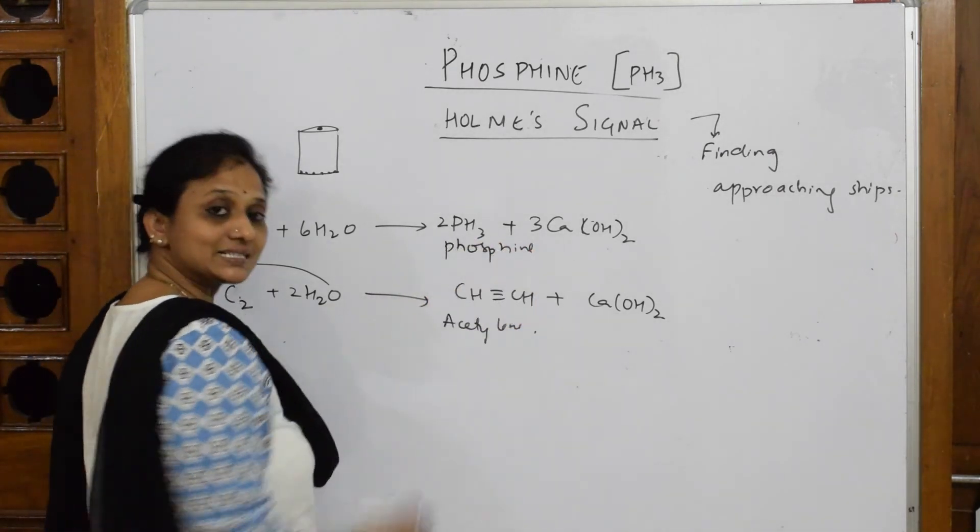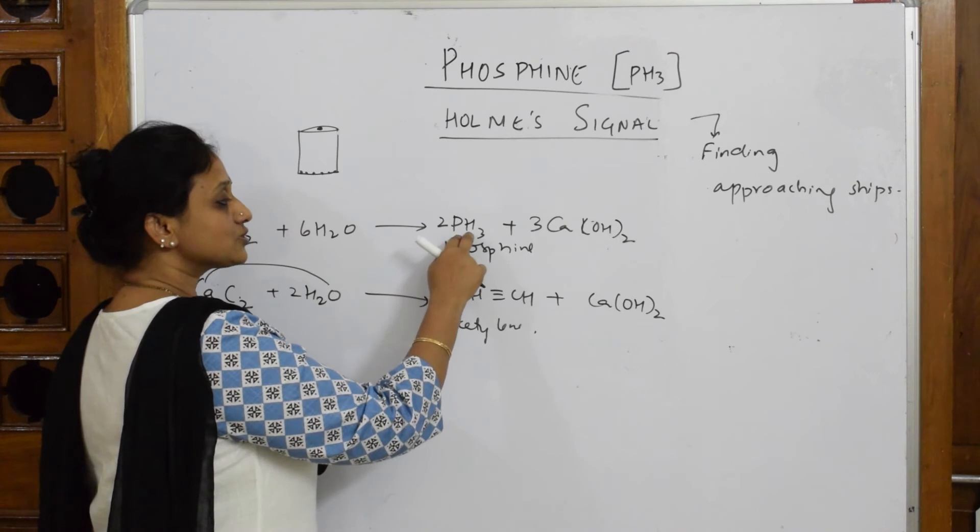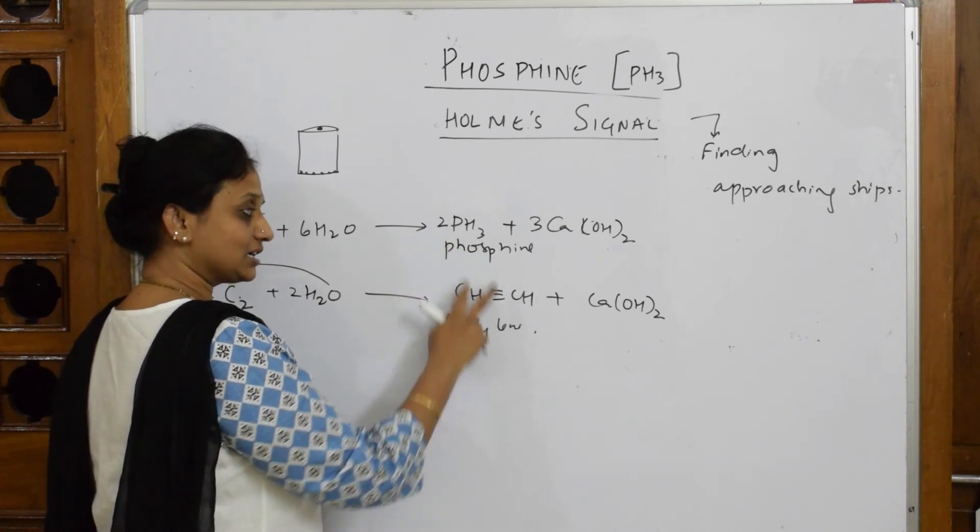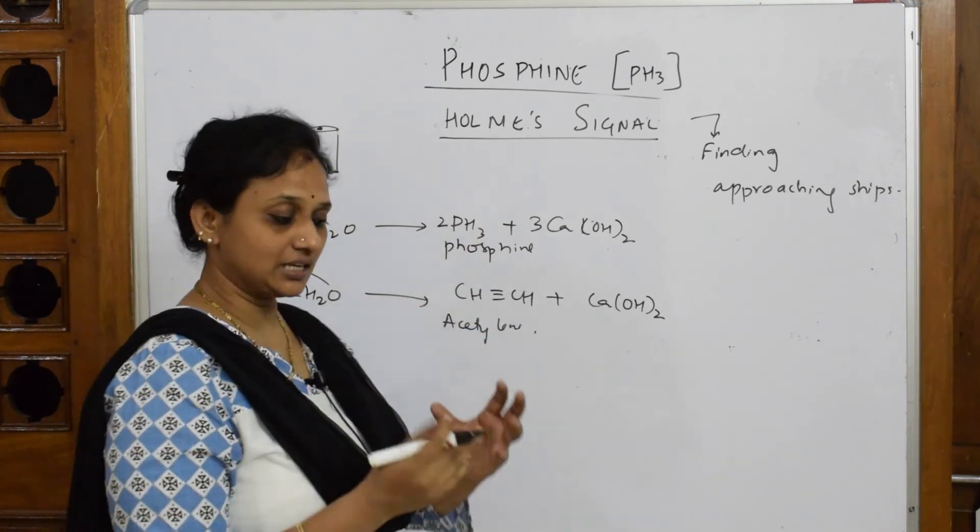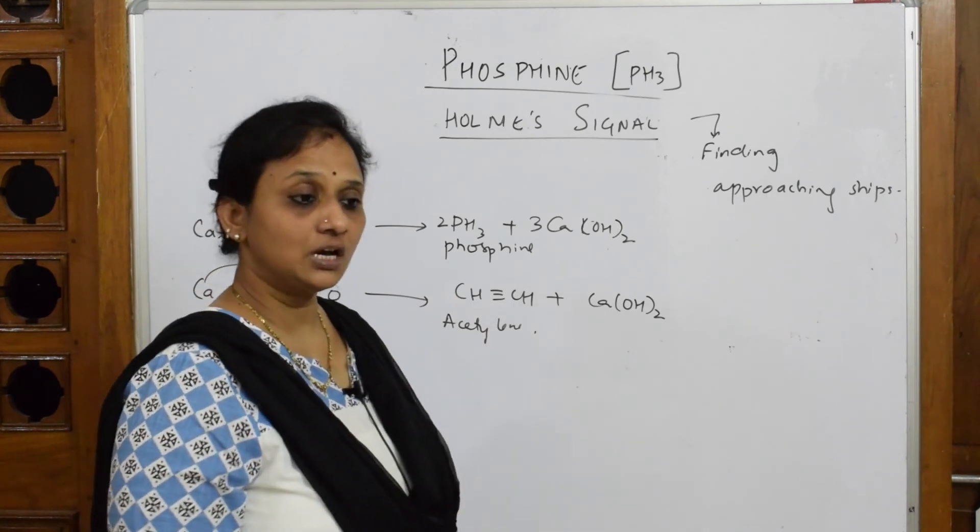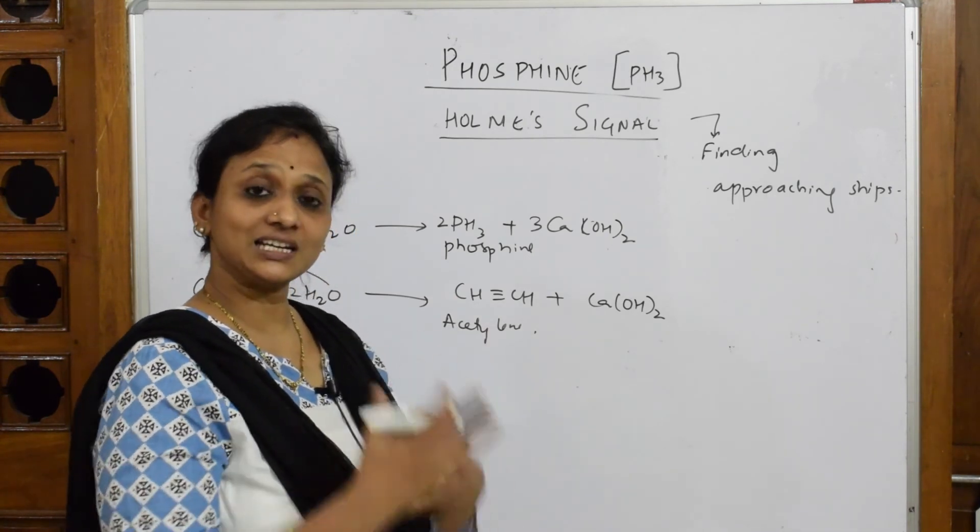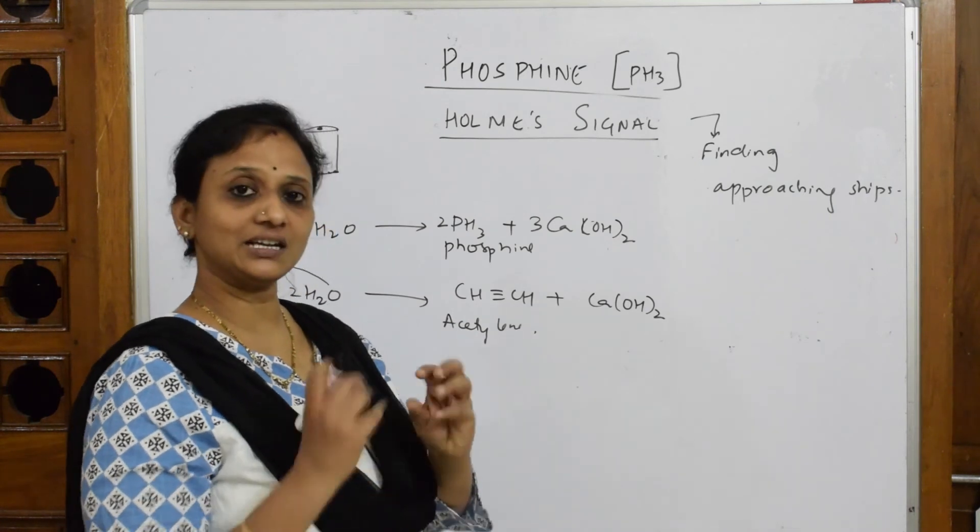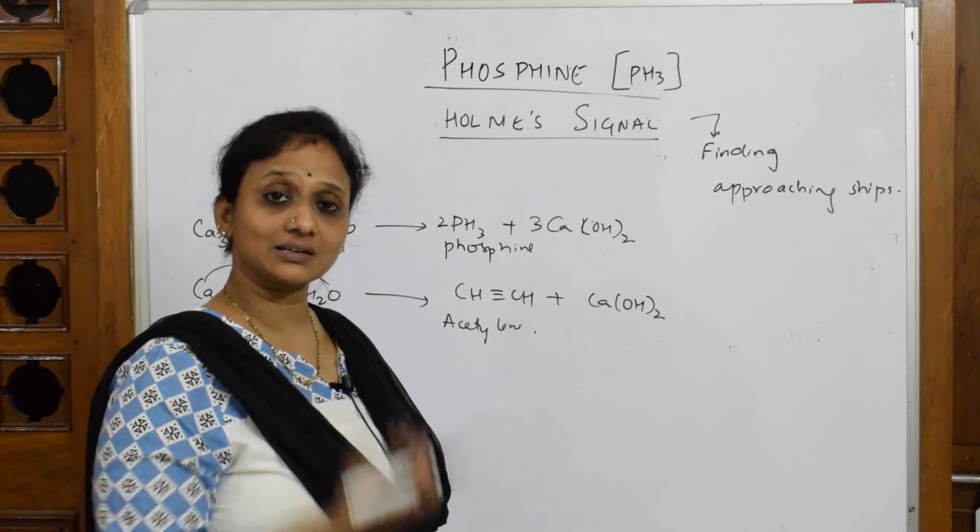Now what happens? This phosphine along with air combines with acetylene. Once it combines with acetylene, it does not explode - it gets ignited and immediately it's going to give a red light from that can.